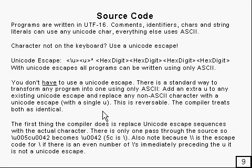This process is completely reversible — you can just do the reverse and get exactly the same program you started with. The compiler treats both as identical, because it's designed to regard any number of U's after the initial one as insignificant.